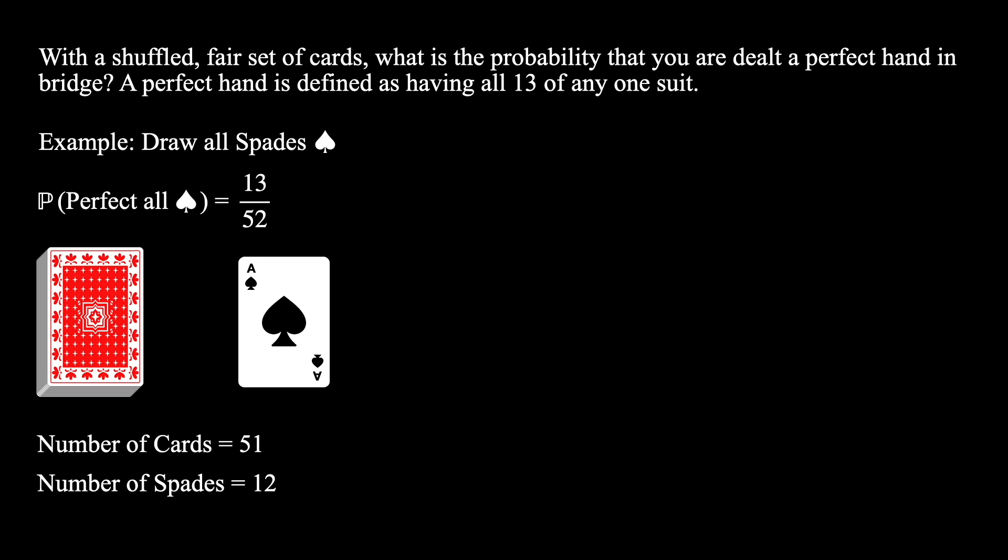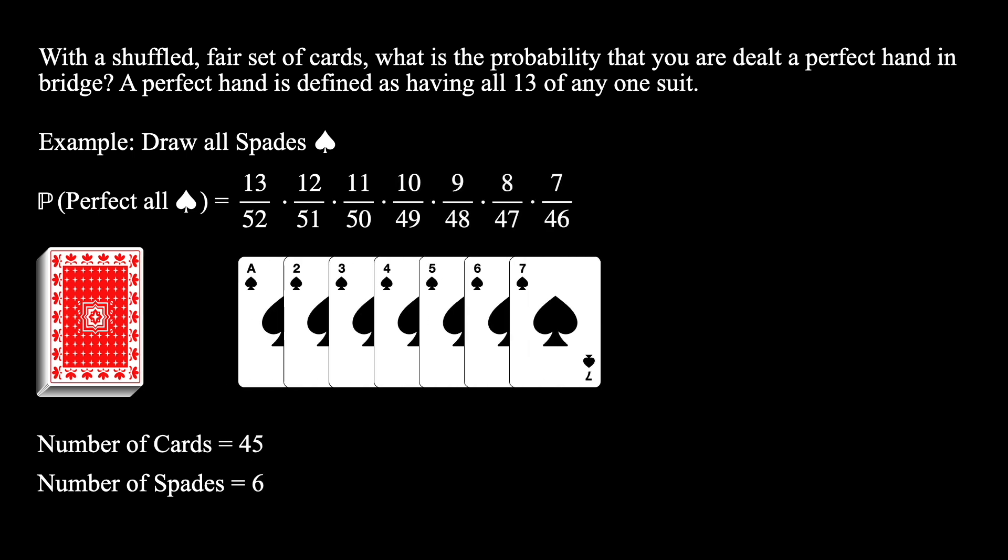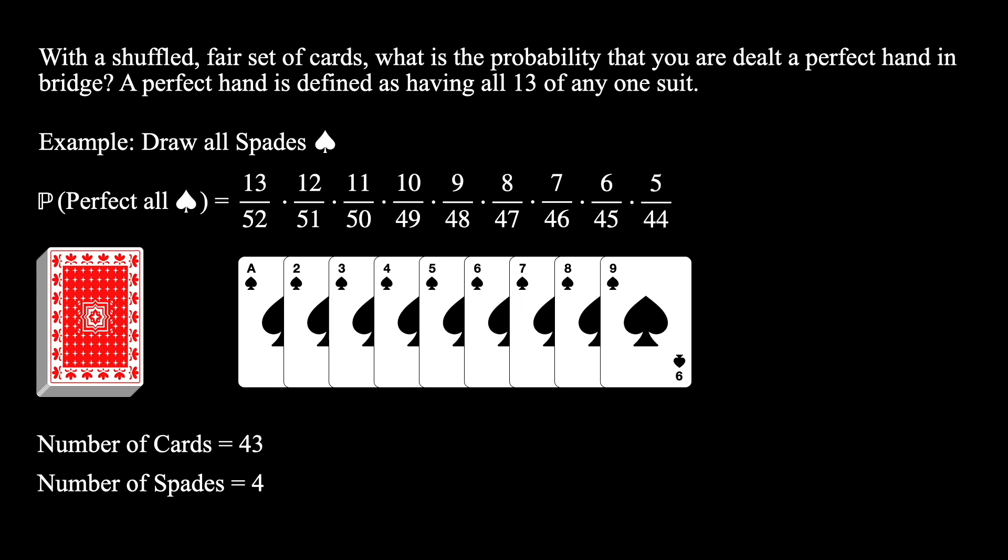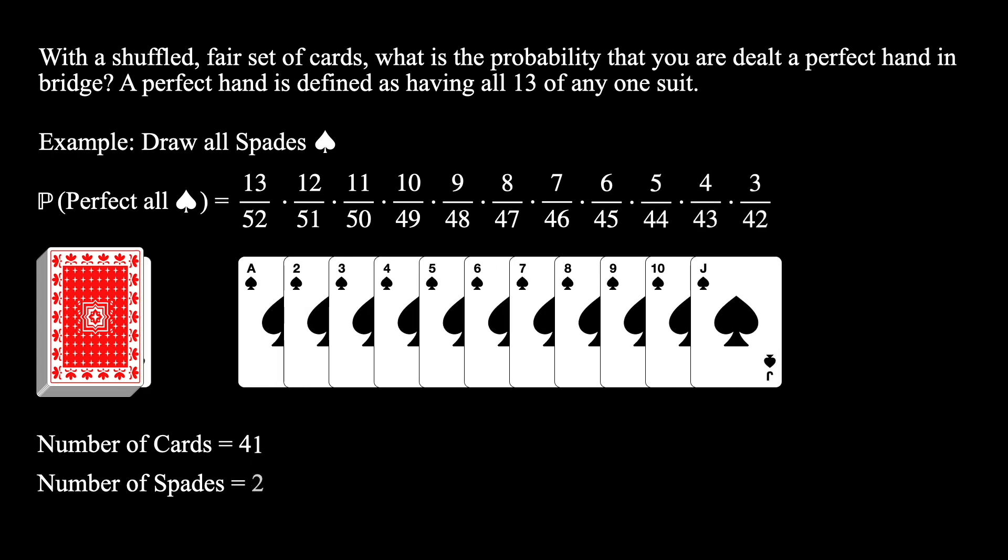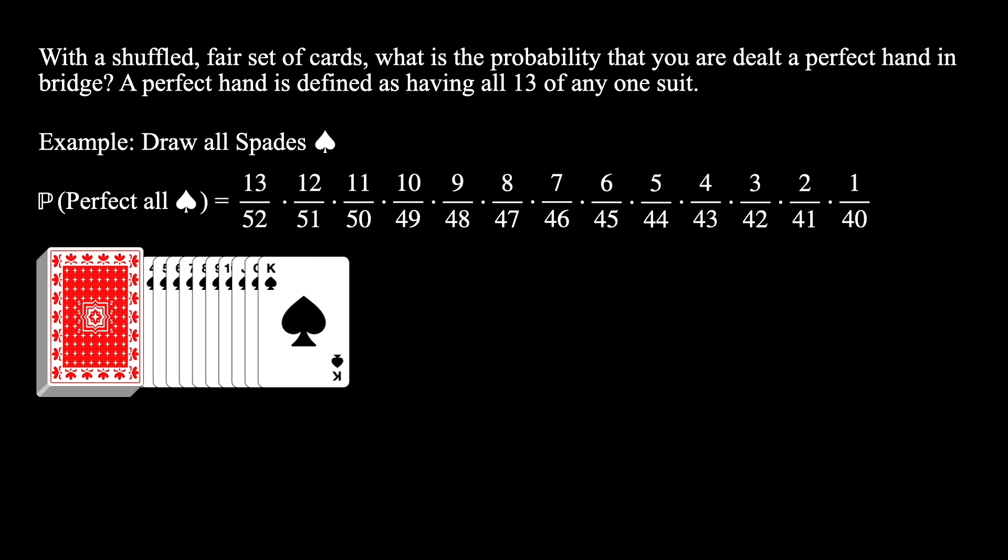We see that drawing out this card decrements both the number of cards and the number of spades by 1. Therefore, the next draw has a probability 12 divided by 51 of being spades. Every time we draw one more card, we decrement both of these numbers by 1 until we eventually run out of spades in the deck. At this point, we can stop our iteration. Okay, let's put the cards back in.